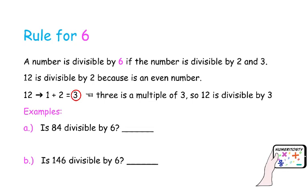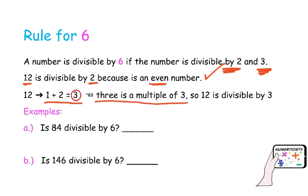How do we know if a number is divisible by 6? This one is a tricky one. A number is divisible by 6 if the number is divisible by both 2 and 3. If a number is divisible by 2 and 3, then for sure it's divisible by 6 too. Is 12 divisible by 6? 12 is even, so it's divisible by 2. Adding the digits: 1 plus 2 equals 3. 3 is a multiple of 3, so 12 is also divisible by 3. Therefore, 12 is divisible by 6.